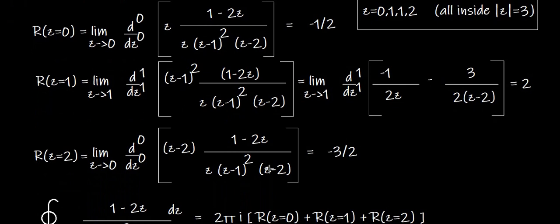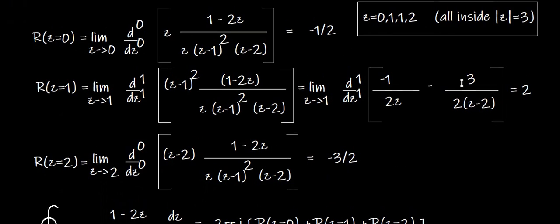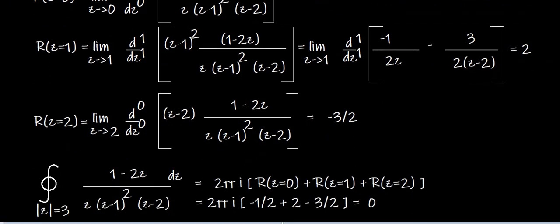Residue at z=2 (simple pole): cancel (z−2) and apply limit z→2. Substituting gives (1−4)/[2·(2−1)²] = −3/(2·1) = −3/2. Adding all residues: −1/2 + 2 + (−3/2) = 0. So the integral equals 2πi · 0 = 0.